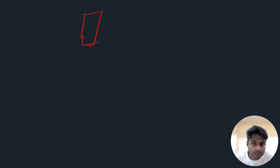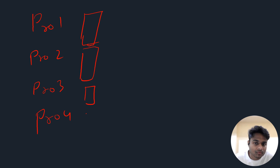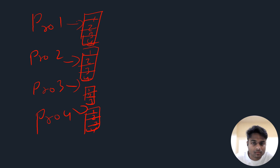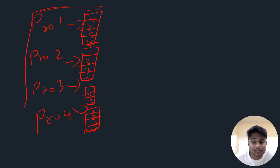In paging, we divide our process into pages and bring them into RAM. For example, if we have four processes — process one, process two, process three, and process four — we divide all these processes into N number of pages. Then we bring those pages into our RAM rather than the entire processes.